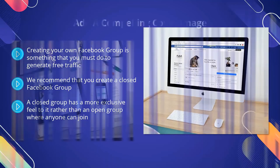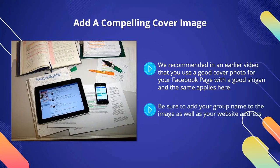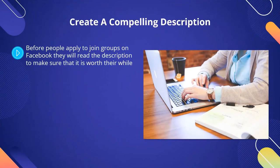Now, you need to take steps to optimize your group to attract members. Add a compelling cover image. We recommended in an earlier video that you use a good cover photo for your Facebook page with a good slogan, and the same applies here. A Facebook group is a great way to promote your brand, so use a high-quality image and slogan that lets people know why the group is worth joining. Be sure to add your group name to the image as well as your website address. Don't over-hype the photo by adding images of dollars — this will make it look cheap. People want to know who you are, so always add your best photo. Create a compelling description. Before people apply to join groups on Facebook, they will read the description to make sure that it is worth their while. Treat your description as a sales page for your group. Always add a link to your website in the group description.